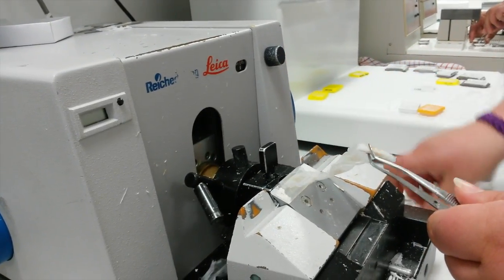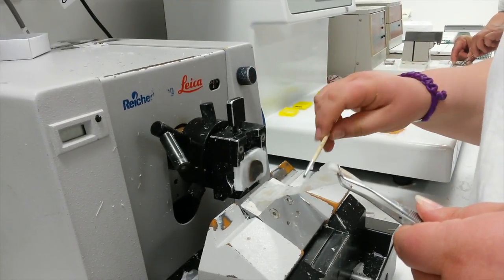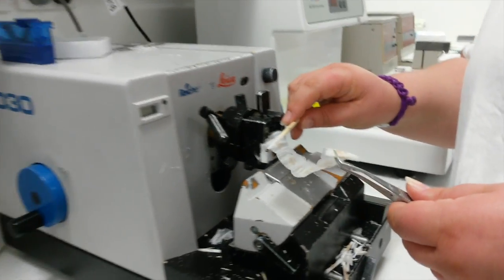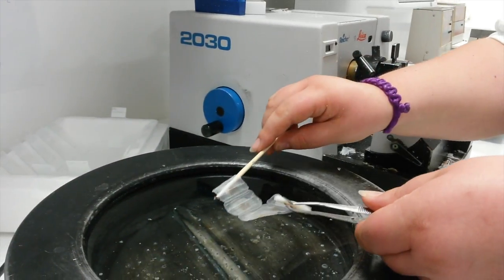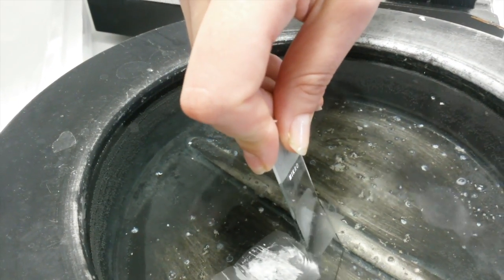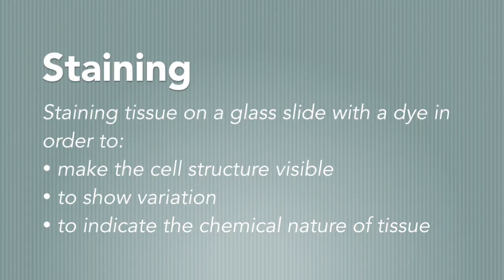The microtome has a screw thread that advances the block toward the blade by 3 to 6 microns per rotation. The paraffin block must be very cold in order to be cut correctly. Once cut, a ribbon of sections is floated onto a water bath. Glass slides are able to pick up each individual section and are dried on a hot plate or incubator before moving on to the next stage: staining. Staining refers to the process of staining tissue on a glass slide with a dye in order to make the cell structure visible, to show variation in these structures, and to indicate the chemical nature of the tissue elements.